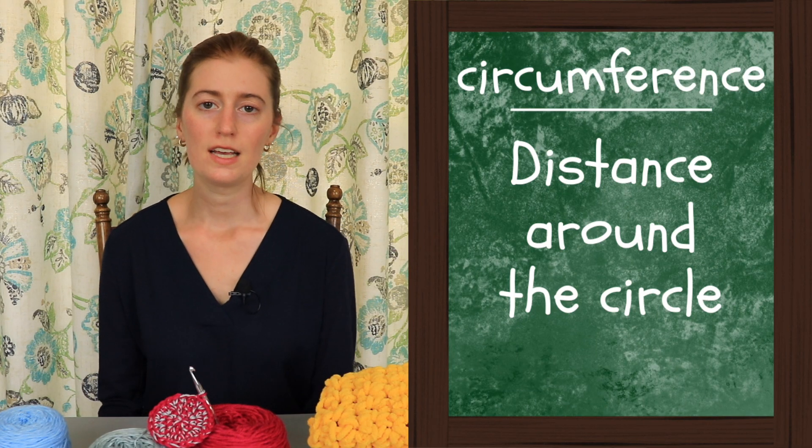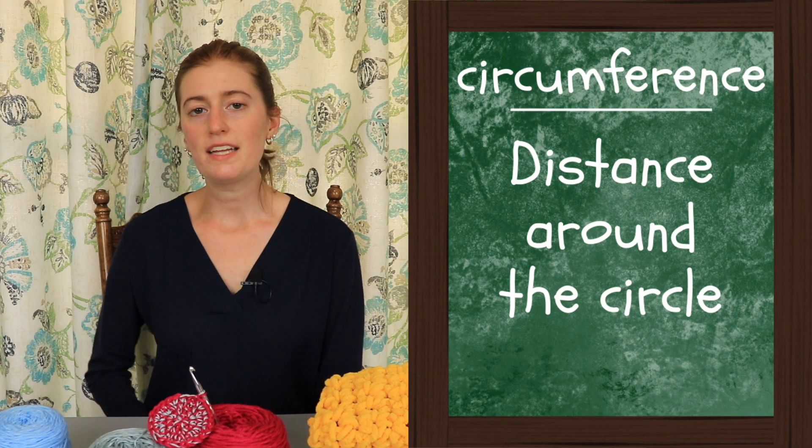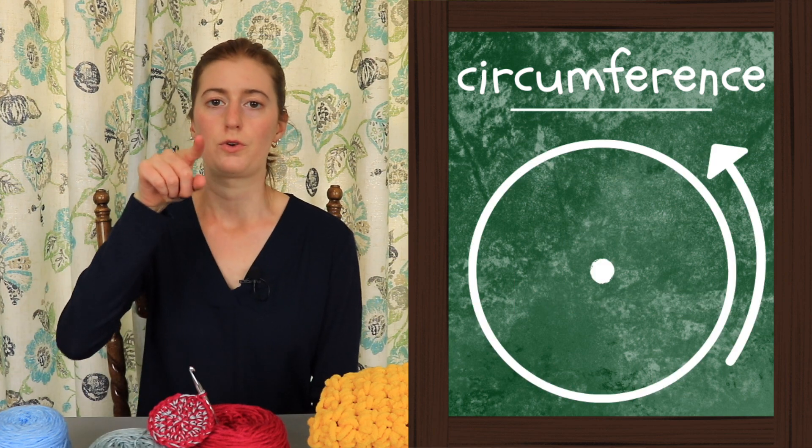A second important part of a circle is the circumference — a big word that basically just means the distance around the circle. Another way to think about it: if you were to walk around a big circular walking track, the circumference would be the distance of that track. Many years ago, very smart people figured out there's a special relationship between the radius and the circumference, and that if you know the value of one you can find the value of the other.